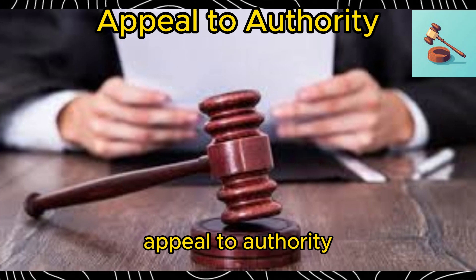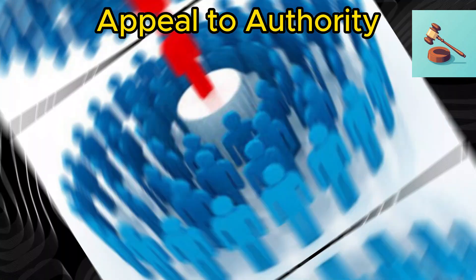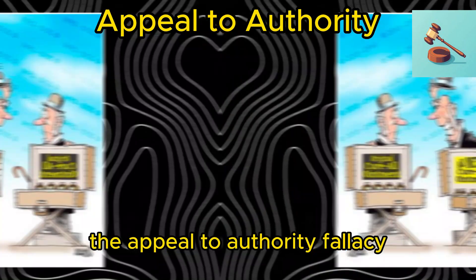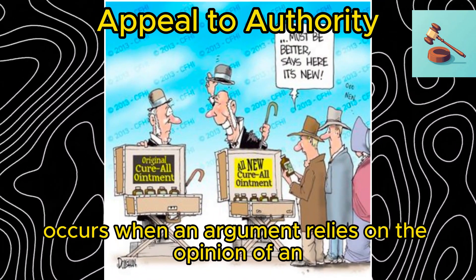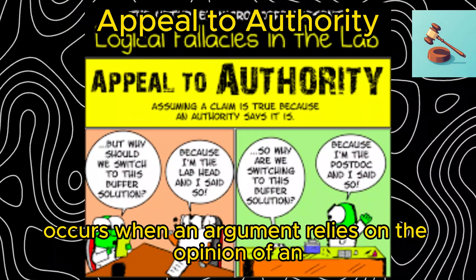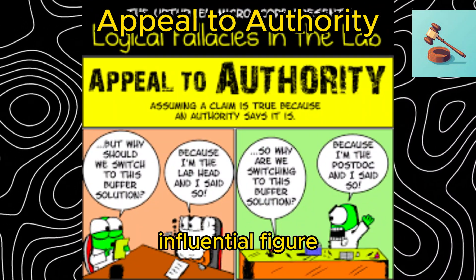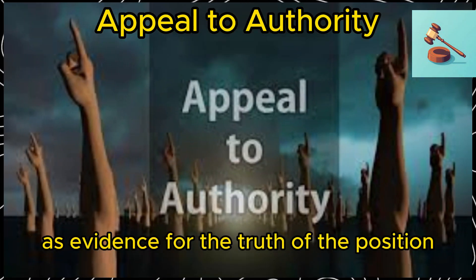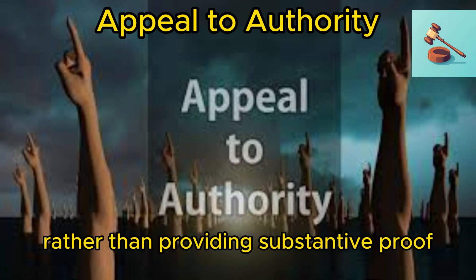Appeal to authority. The appeal to authority fallacy occurs when an argument relies on the opinion of an influential figure as evidence for the truth of the position, rather than providing substantive proof.